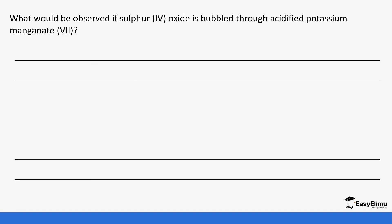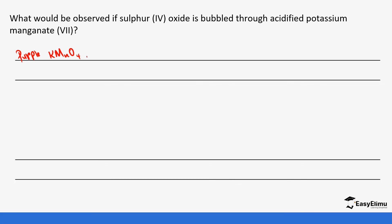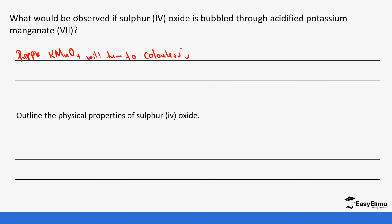Let's do one question: what would be observed if sulfur dioxide is bubbled through acidified potassium permanganate? The purple potassium permanganate will turn colorless. Note that you have only been asked what would be observed, not to explain why. Then, outline the physical properties of sulfur dioxide: it is acidic in nature, it has an irritating smell, it is denser than air, and it is very soluble in water.